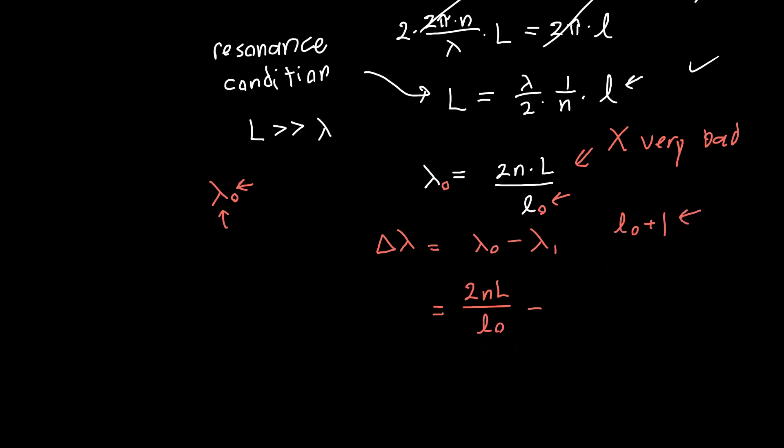of course, is going to correspond to an integer l naught plus 1. So we've got an extra multiple of 2 pi in our cavity. So 2n times l divided by l naught plus 1.